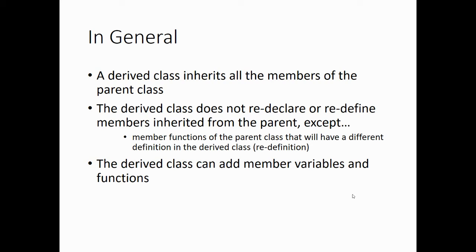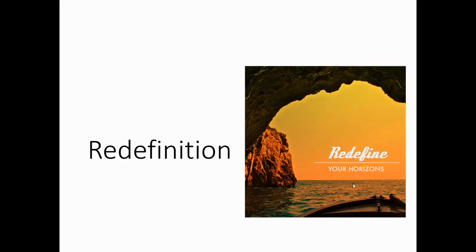In general, a derived class inherits all the members from the parent class. The derived class does not redeclare or redefine the inherited members unless you want to change how they behave. If they're going to behave differently in the derived class, then you need to redeclare or redefine them. You may also hear the term override, which in C++ is generally reserved for virtual functions — we'll cover those later. A derived class can also add member variables and functions that are peculiar to the derived class. Let's take a look at redefinition.